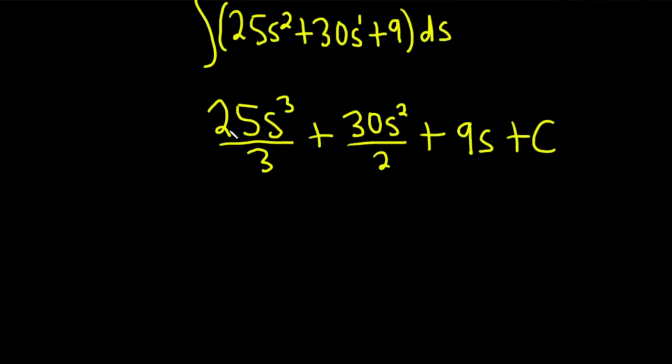So 25 over 3 is just 25 over 3. You can't do anything with that. So this is 25 over 3 s cubed. 30 over 2 is 15. We have 15s squared plus 9s plus our constant of integration capital C.